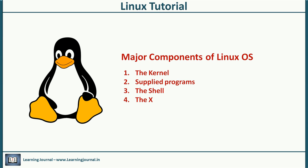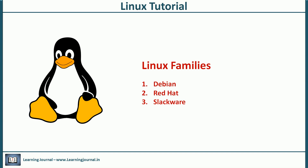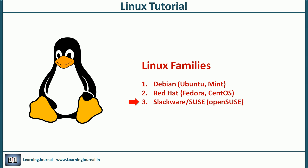There are more than 500 Linux distributions, but primarily we classify them in three main families based on their historical origin. Debian is probably the oldest distro that became popular, and Ubuntu and Mint are the current favorite variations of Debian. Red Hat is a commercial distribution, and Fedora and CentOS are some free alternatives of Red Hat. Slackware was also a commercial distribution, but now it is known as SUSE.